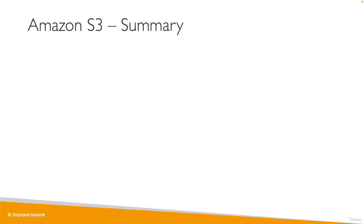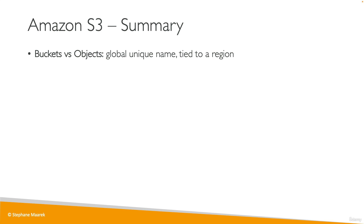Let's summarize what we've learned about Amazon S3. First of all, we've learned about the difference between buckets and objects. Buckets must have a globally unique name and are tied to a specific region, and objects live within these buckets.